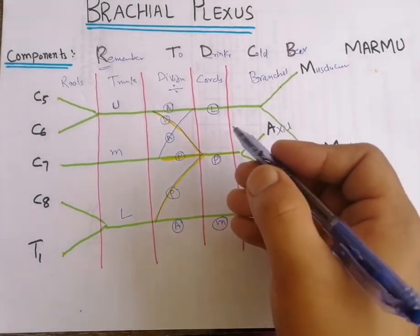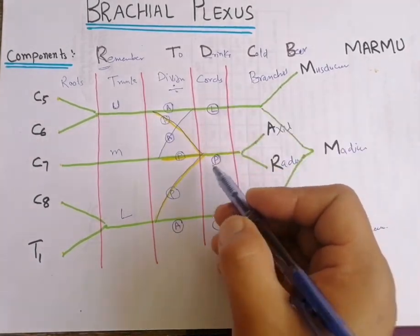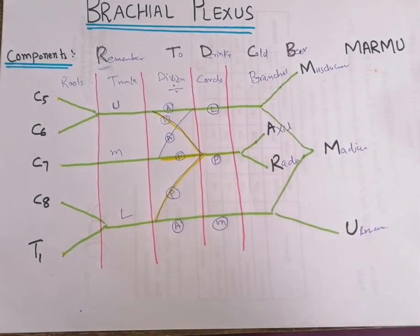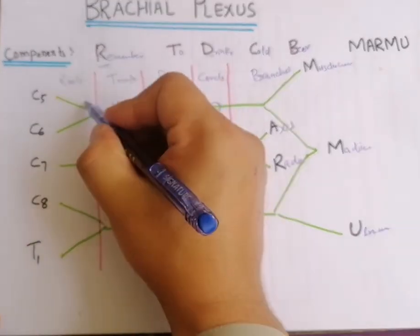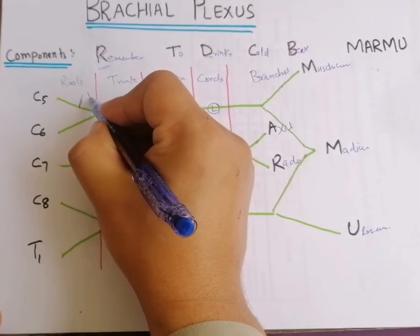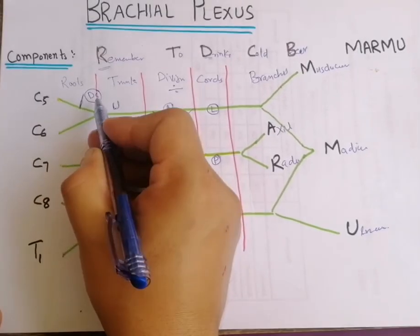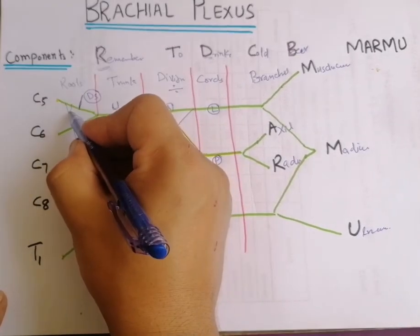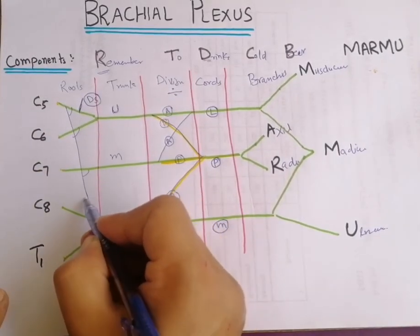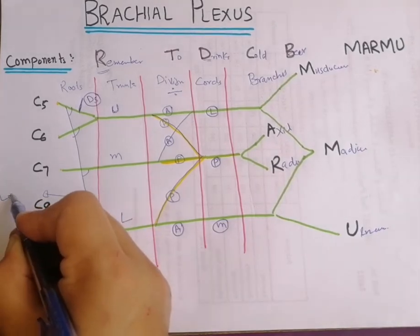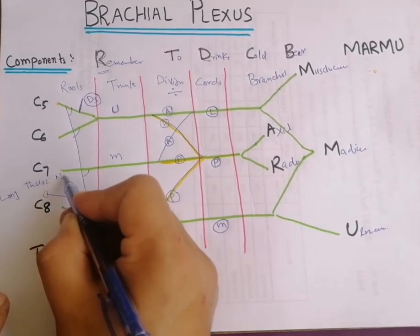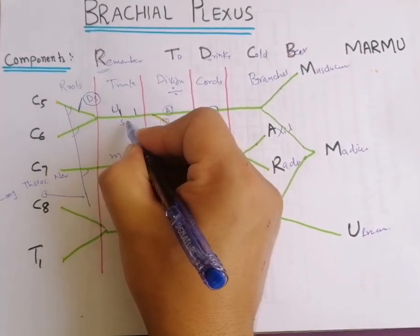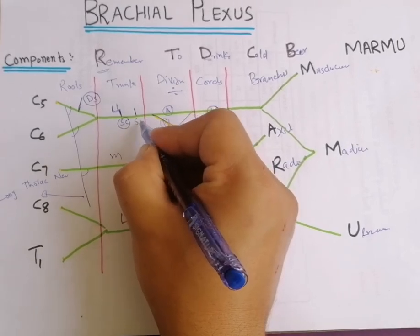These cord names are based on their relation to the axillary artery. Regarding branches: the C5 root gives a branch called the dorsal scapular nerve. The roots of C5, C6, and C7 together give the long thoracic nerve. The upper trunk gives two branches: the suprascapular nerve and the nerve to subclavius.